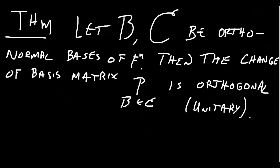A consequence: if we have two orthonormal bases B and C for F^n, then the change-of-basis matrix from C to B will also be an orthogonal or unitary matrix.